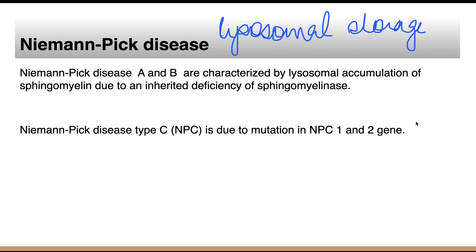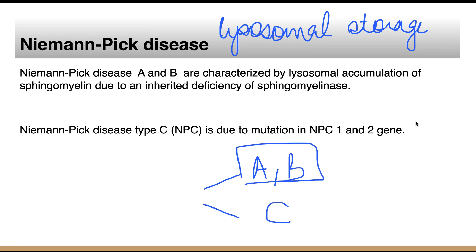It has various types: A, B, and C. Type A and B are a distinct entity altogether from type C. In type A and B, there is deficiency of the sphingomyelinase enzyme. Therefore, if sphingomyelinase is absent, it will not be able to break down sphingomyelin, and sphingomyelin accumulates in the lysosomes. This is the main pathology behind Niemann's Pick disease type A and B.